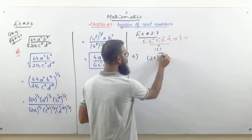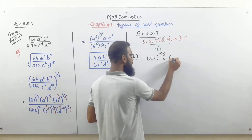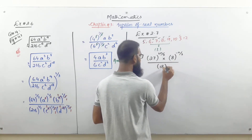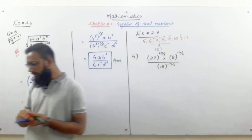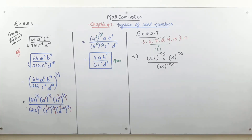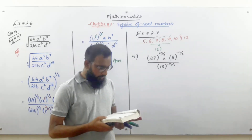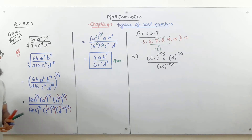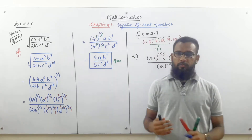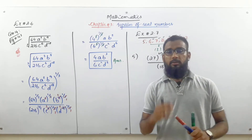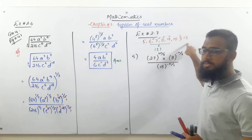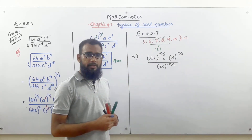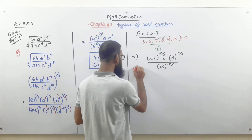Question number 5: 27 raised to the power 2n/3, multiplied by 8 raised to the power −n/3, divided by 18 raised to the power −n/2. That is the full question. Now question number 5 has been written. We are going to solve it — let's understand how.